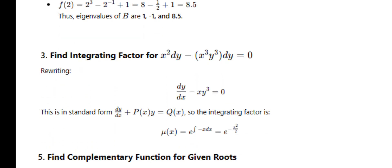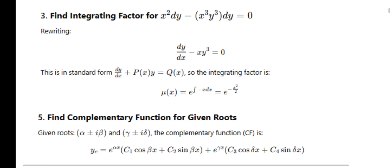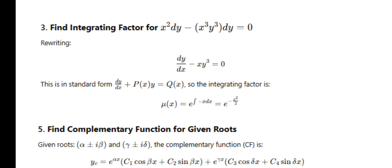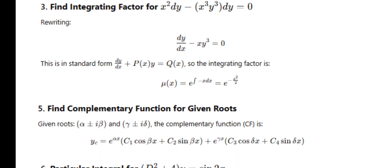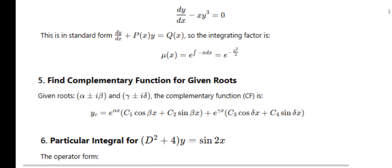Next question: integrating factor. The integrating factor is e^(∫P dx) or e^(∫Q dy). The given form is dy/dx - xy³ = 0. Note: the question as printed has an error — it should be dx. Converting: dy/dx - xy³ = 0 is in the form dy/dx + P(x)·y = Q. Here P = -x, so the integrating factor is e^(∫-x dx) = e^(-x²/2).